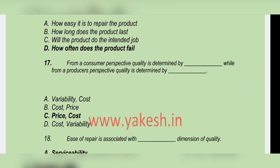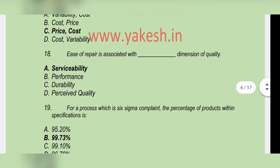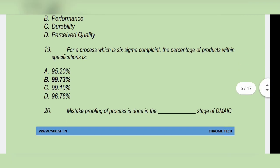From a consumer perspective, quality is determined by price, while from a producer's perspective, quality is determined by cost. Option C: Price/cost. Ease of repair is associated with the — serviceability dimension of quality. Option A: Serviceability is the correct answer.